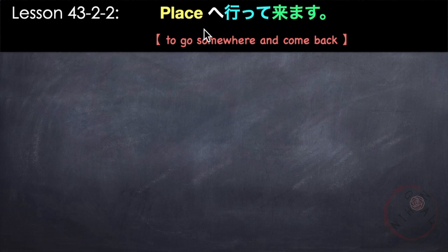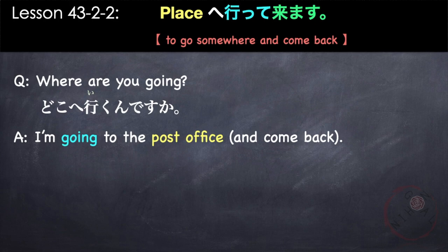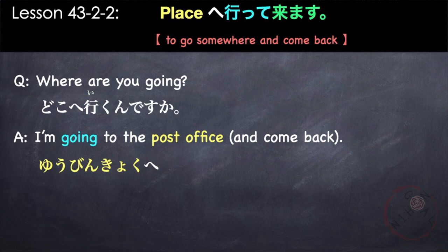Next is when we want to specify the place where we're going. We use place e — particle e for direction — itte, to go, kimasu, to come back. We basically use this pattern when we don't really want to specify what we are going to do in that place. For example, if someone asks 'where are you going?' — Doko e ikundesuka? — 'I'm going to the post office and then come back' — Yubin kyoku e itte kimasu.